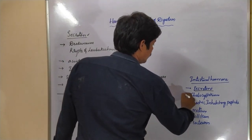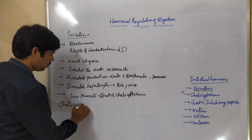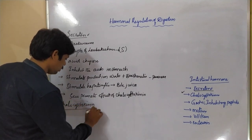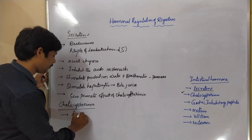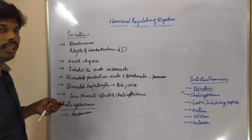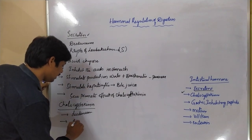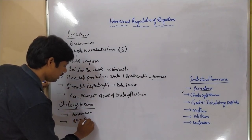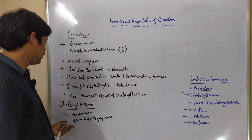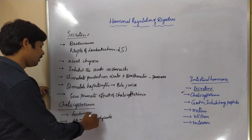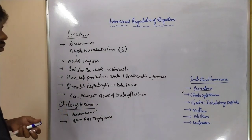Coming to the next hormone, cholecystokinin. Cholecystokinin is also secreted by the duodenum. This secretion is stimulated by acid chyme, especially when that acid chyme is rich in amino acids, fatty acids, and triglycerides. Whenever the acid chyme contains these nutrients, the duodenum produces high amounts of cholecystokinin.